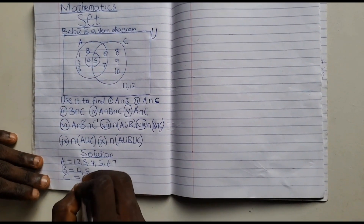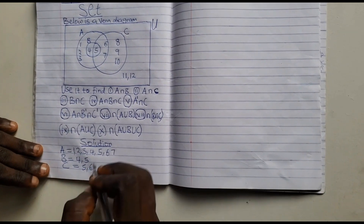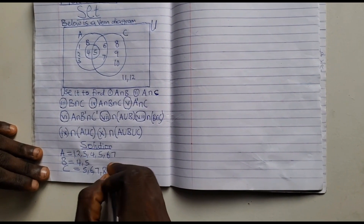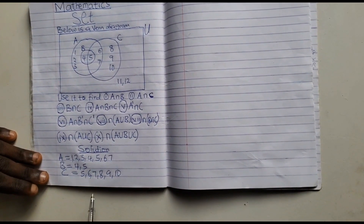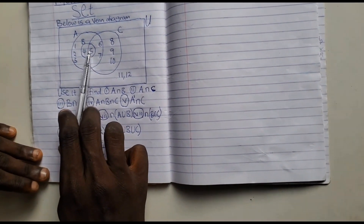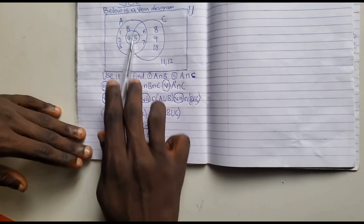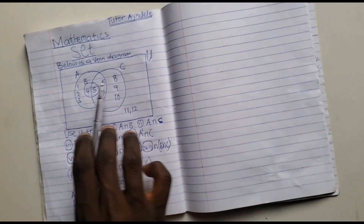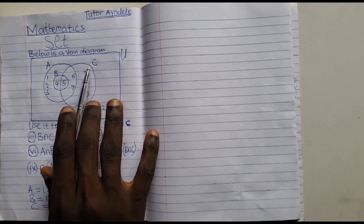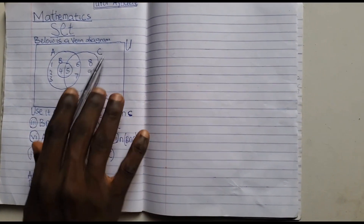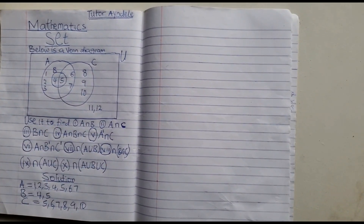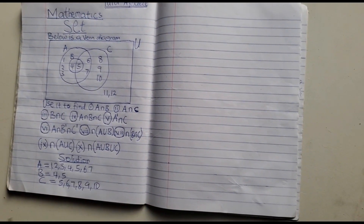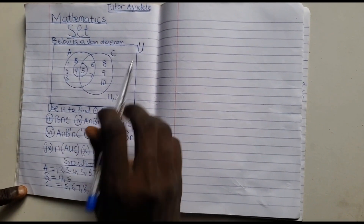So here we have C = {5, 6, 7, 8, 9, 10}. Now, 11 and 12 — they are not under element A, they don't belong to element B, and they are not under element C. So they don't belong to any of these three elements; they are outside. Before we start answering our questions, the next thing we need to write, which is very important, is the universe.